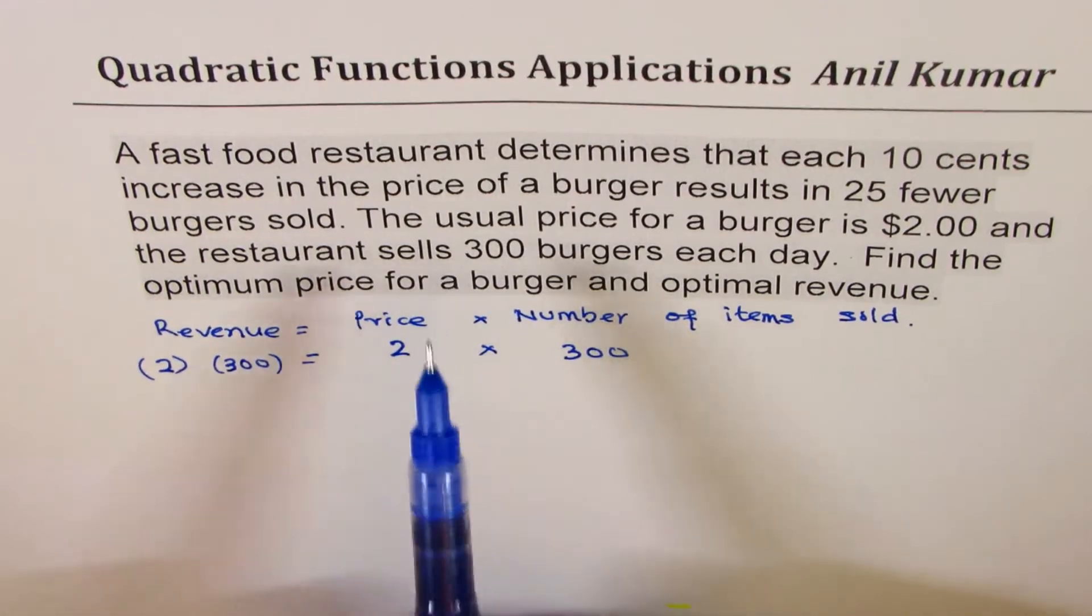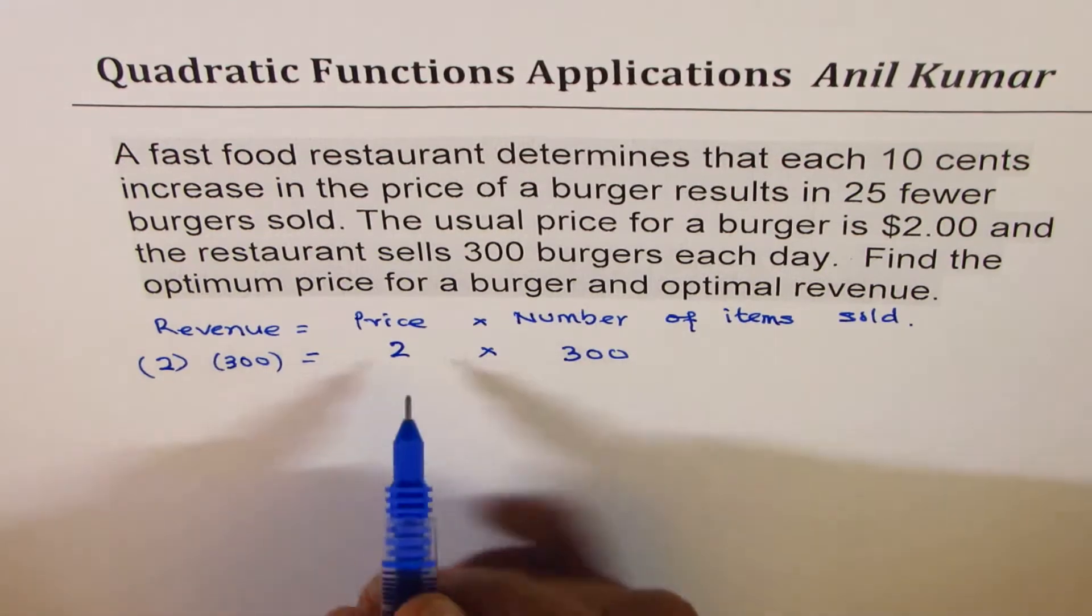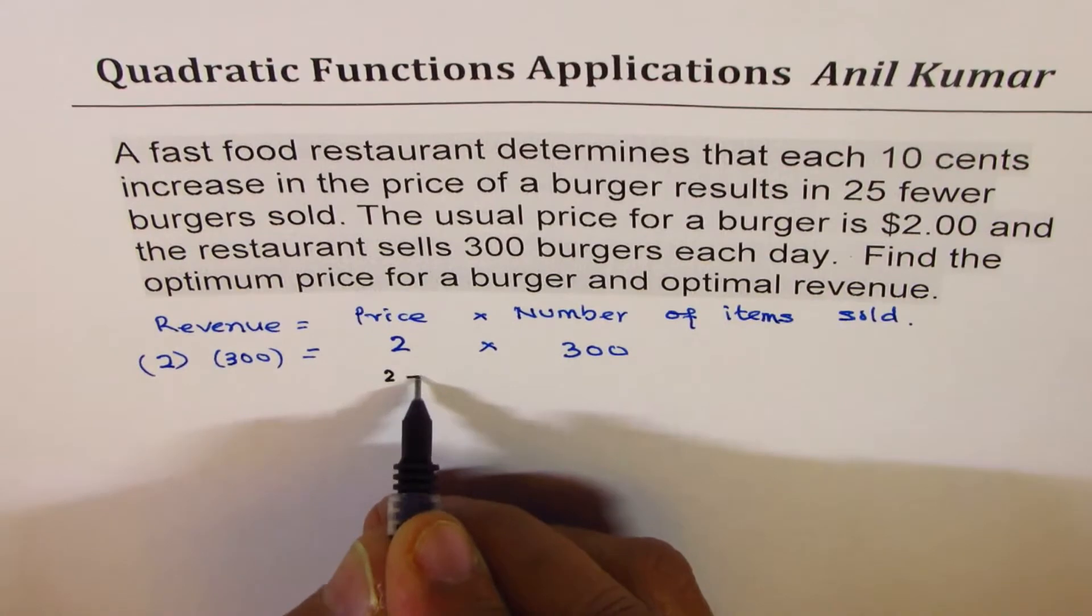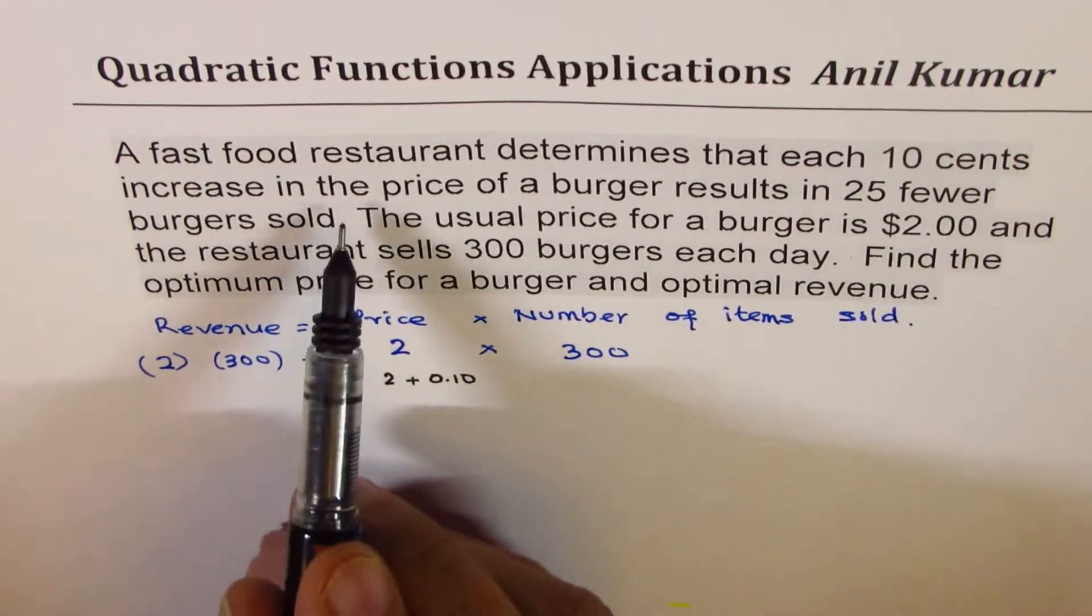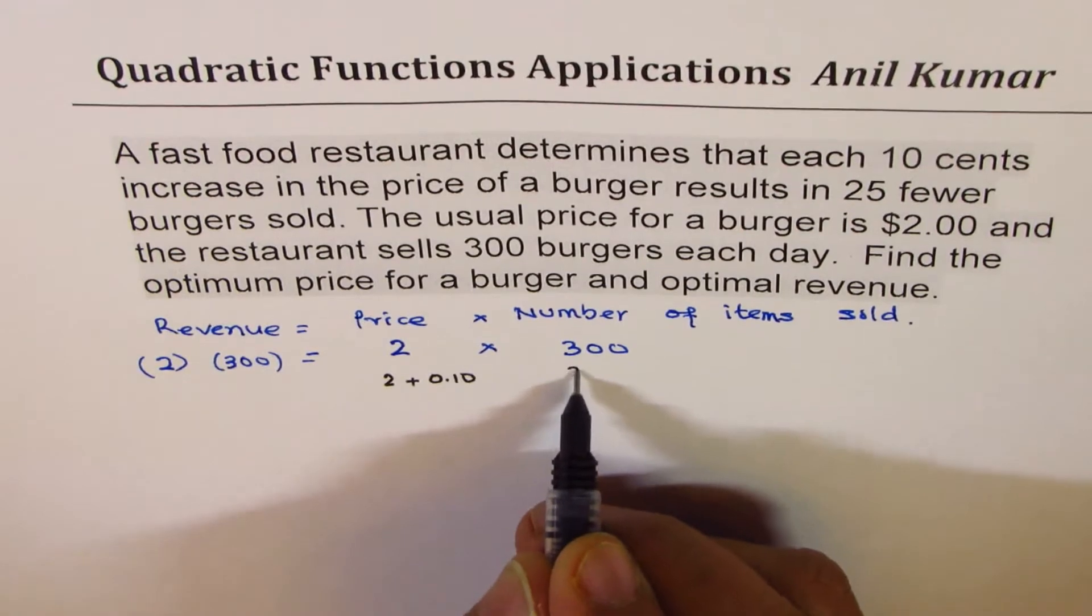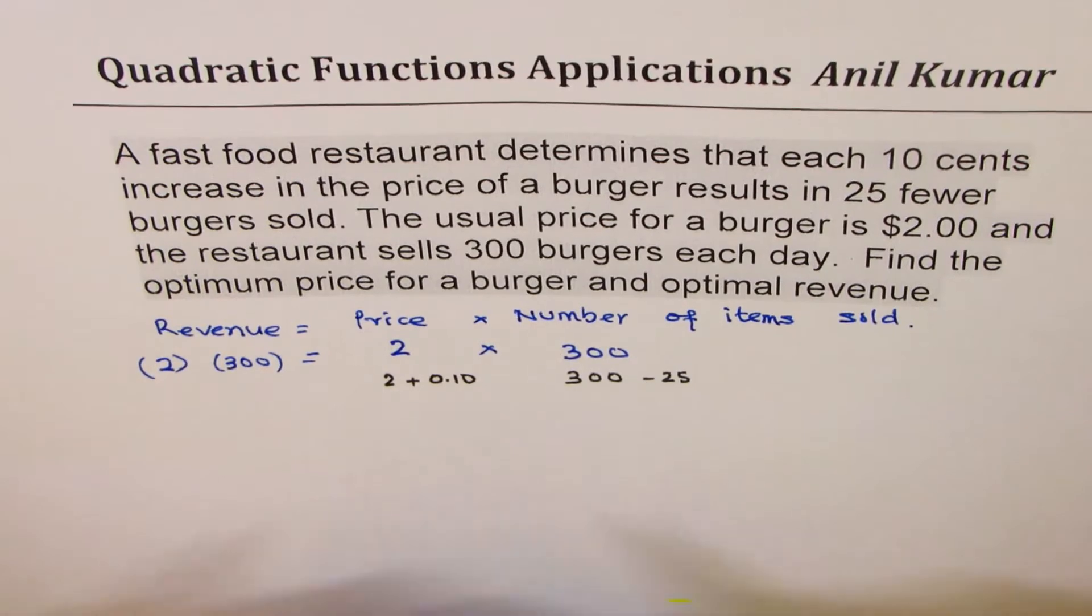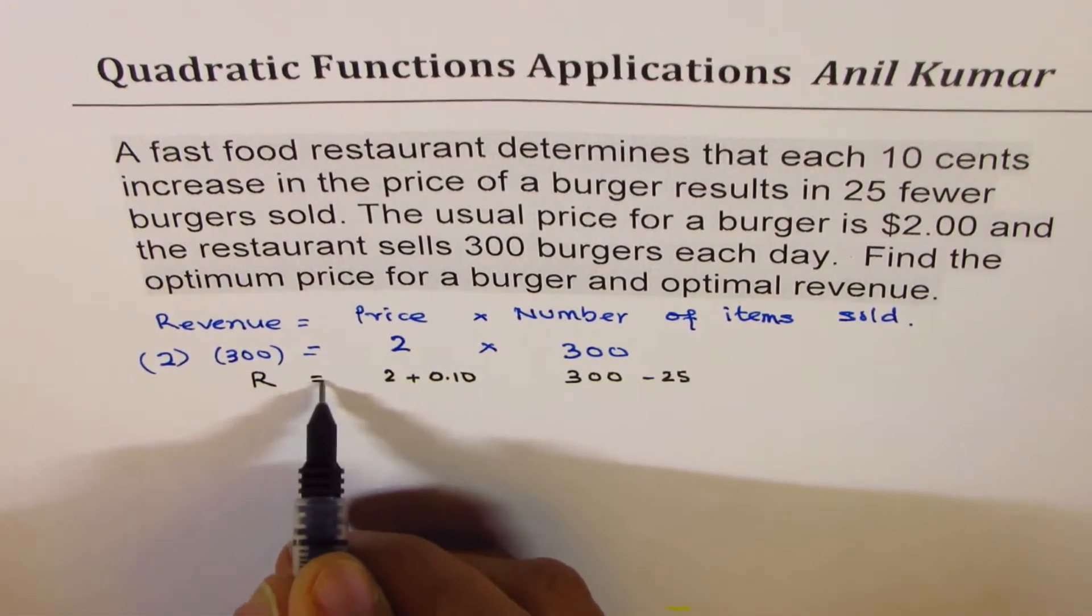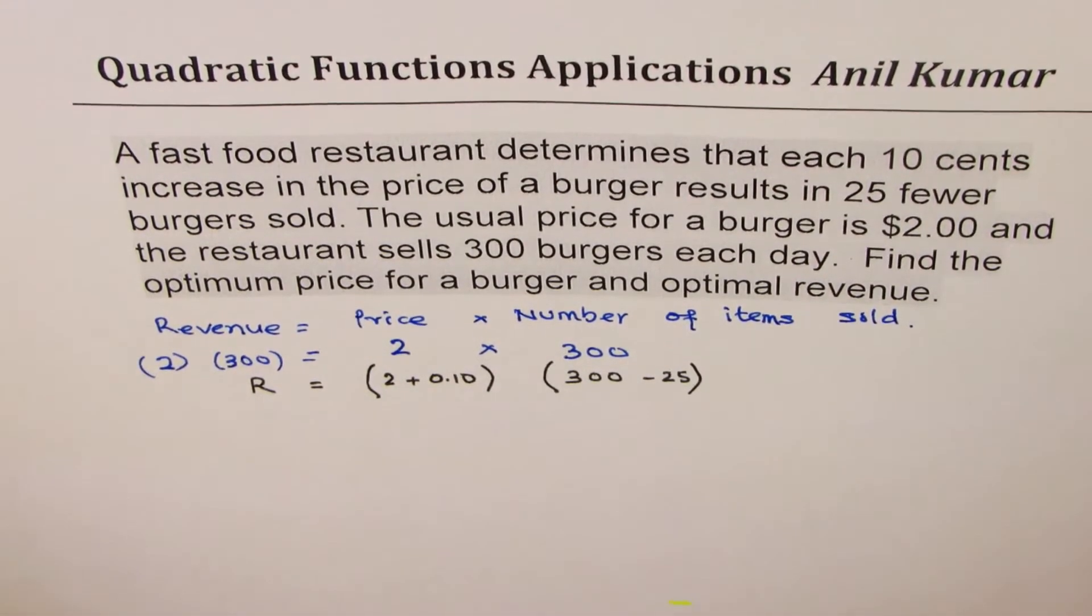Now see what condition is given to us. For each 10 cent increase in price, that means if I increase the price from $2 to $2.10, the burger results in 25 fewer burgers sold. So how many do I sell? I sell 300 minus 25. So the revenue in this case will be equal to the product of these two.